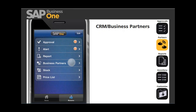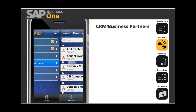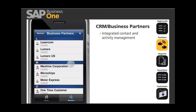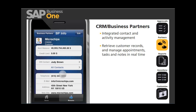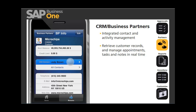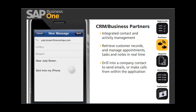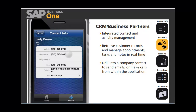The SAP Business One mobile application delivers integrated contact and activity management capabilities that enable you to retrieve customer records and manage appointments, tasks, and notes in real time. In addition to supplying quick access to account information such as balances and credit limits, this fully interactive application also allows you to drill into a company contact to send an email or make a call from within the application.